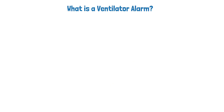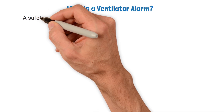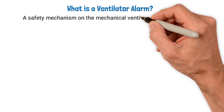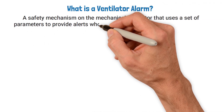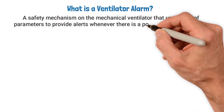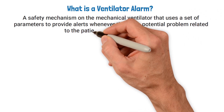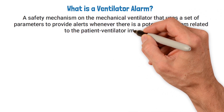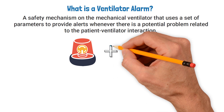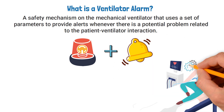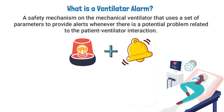A ventilator alarm is a safety mechanism on the mechanical ventilator that uses a set of parameters to provide alerts whenever there is a potential problem related to the patient-ventilator interaction. The alarms can be visual, audible, or both, depending on the ventilator setting and the patient's condition.